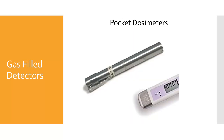The last gas-filled detector we will discuss is the pocket dosimeter, which is worn on the pocket to detect and measure the radiation dose the technologist is being exposed to in their duties. Pocket dosimeters are good for short-term monitoring because they are immediately readable, but they can be inaccurate if not properly used or if they are knocked around. We will discuss other more commonly utilized types of personal monitoring devices later in this video.